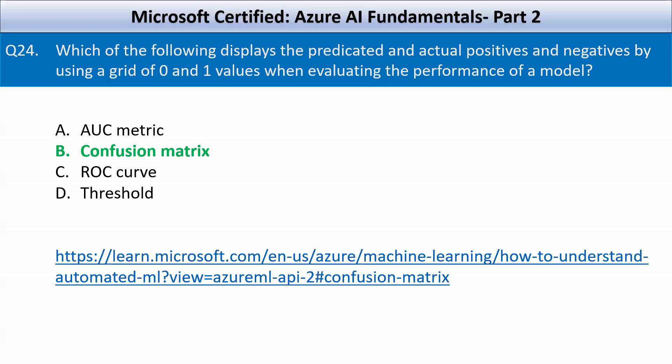If you want to understand the four terms — accuracy, precision, recall, and F1 score — go through the link on your screen as it will provide all the details about the confusion matrix.